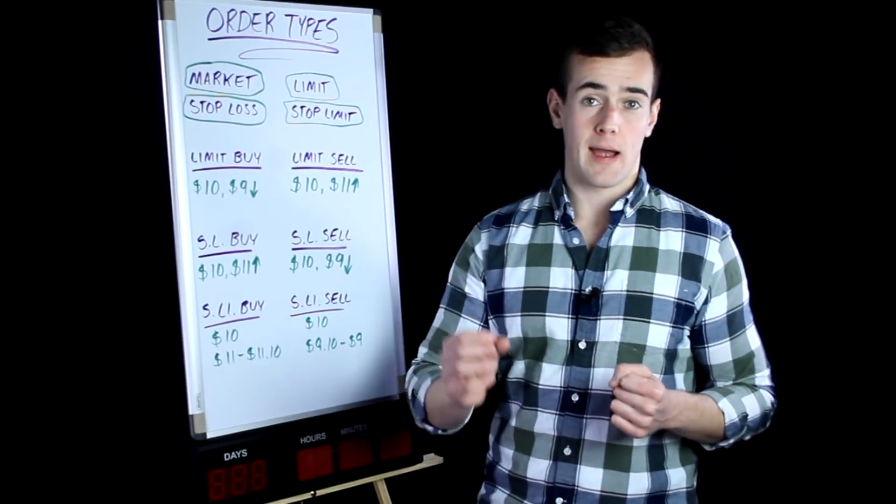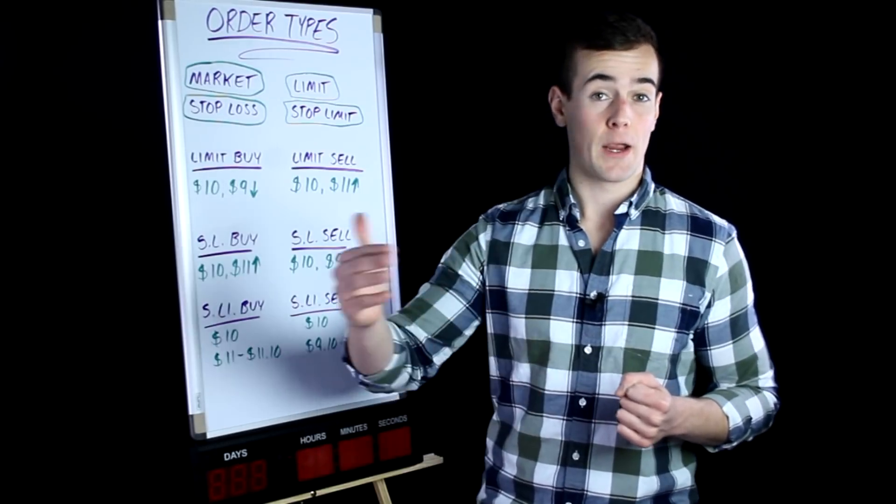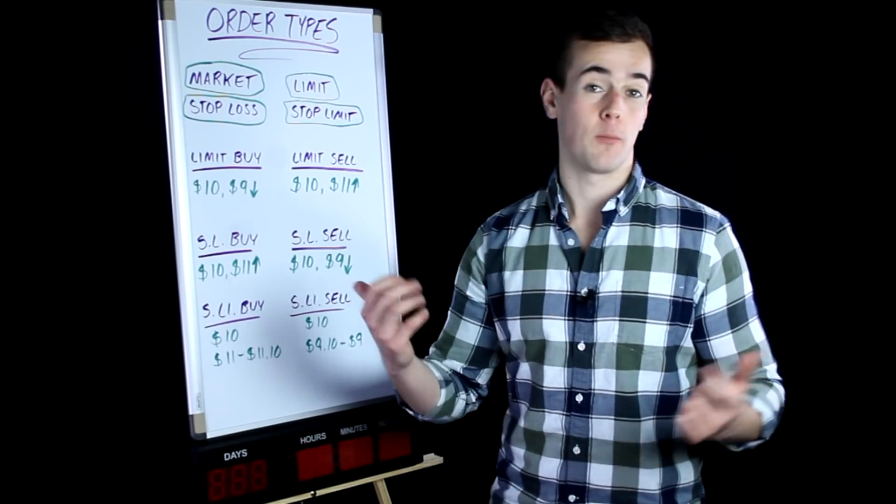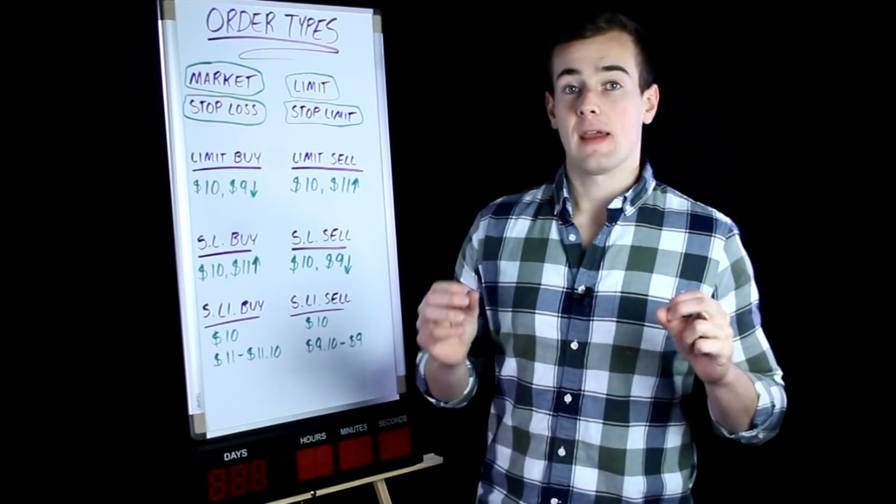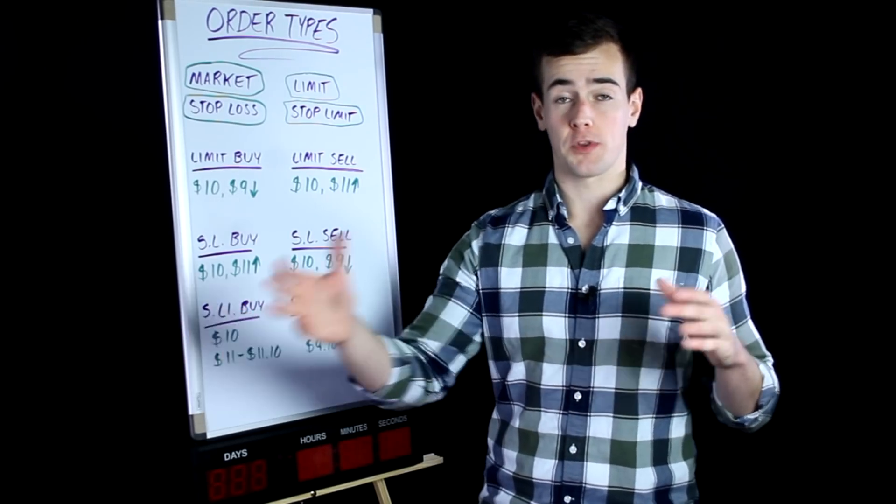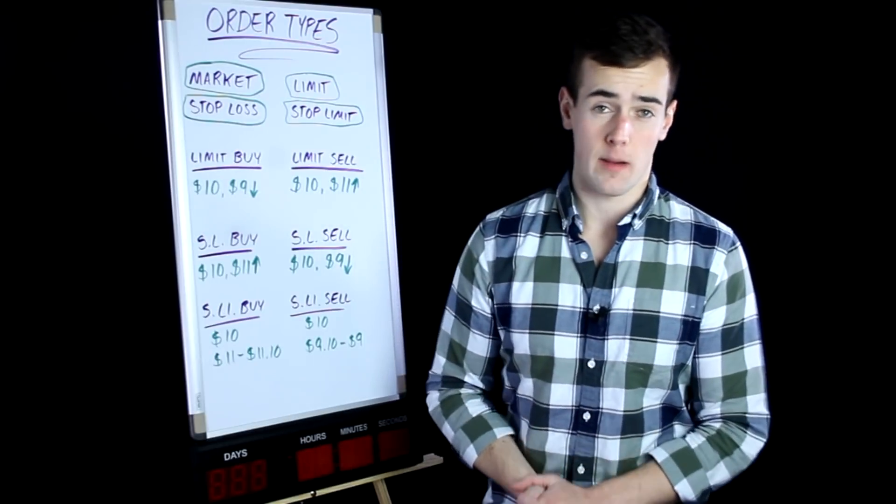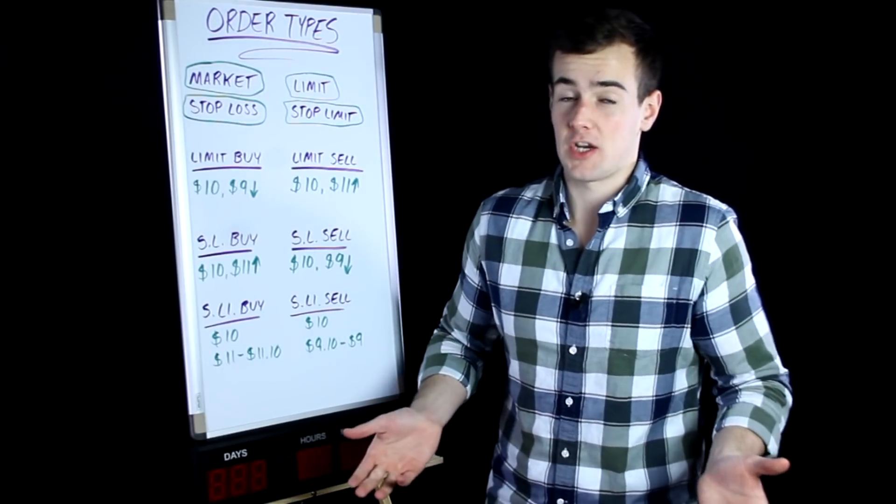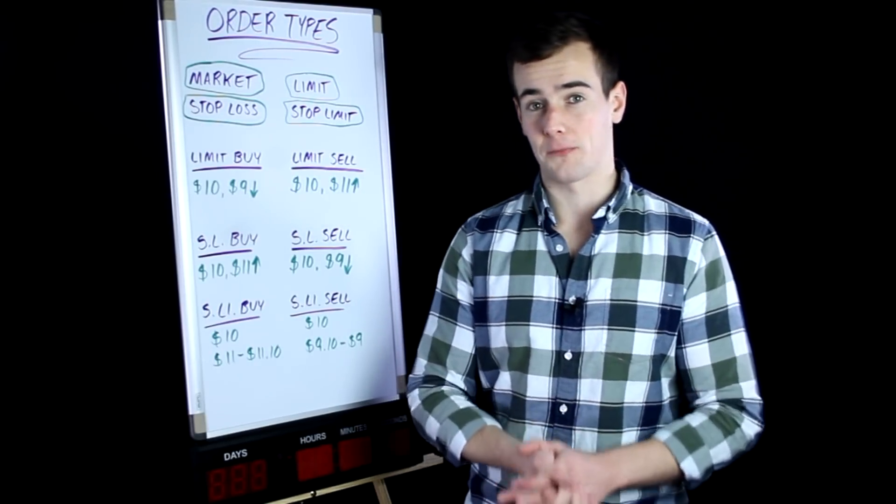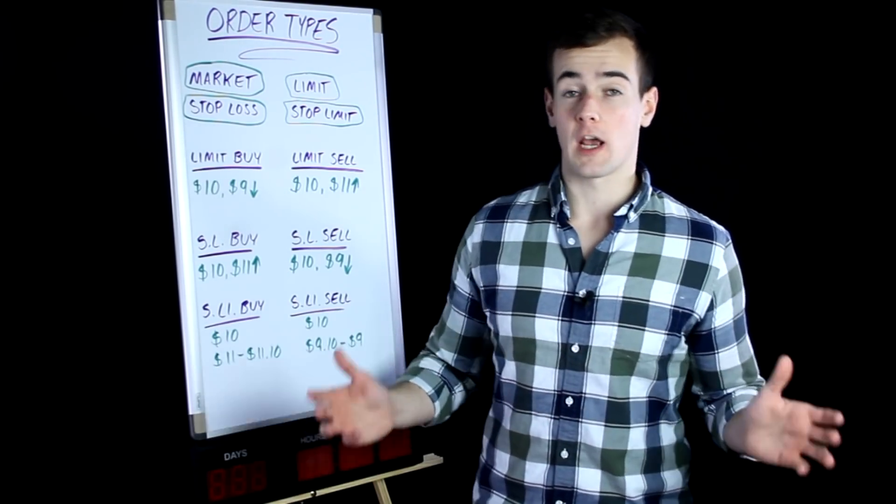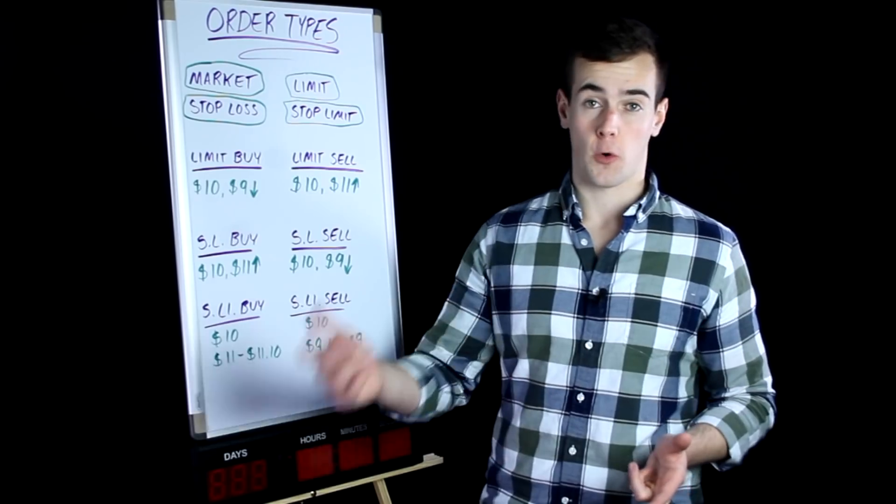And then a stop loss order is a buy or sell order at a set price higher or lower, depending on whether or not this is a buy or sell order. This will make more sense when we show you the example here. And then a stop limit order allows you to have a price range where the order is executed at. So let's go ahead and explain this giving you guys numbers because those verbal explanations are not very helpful. They were certainly not helpful to me. I have to see the numbers for it to make sense to me. So the market order, as we said, that's very simple. It is filled at the current market price.